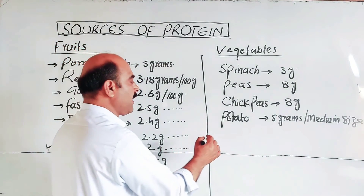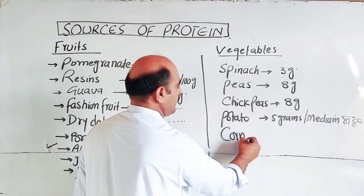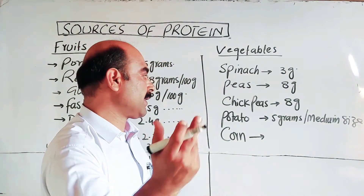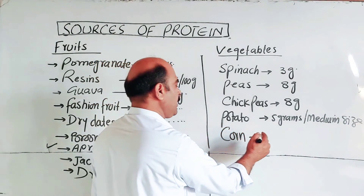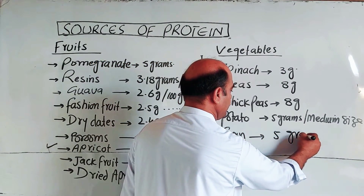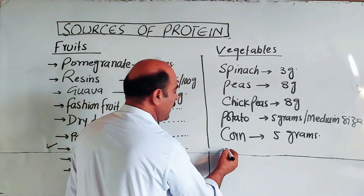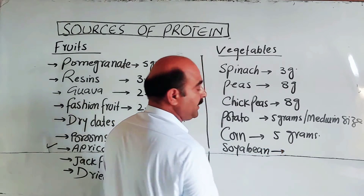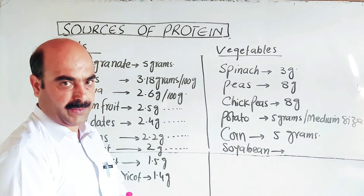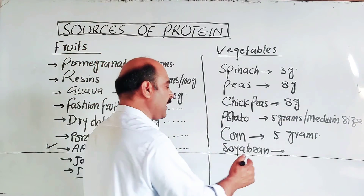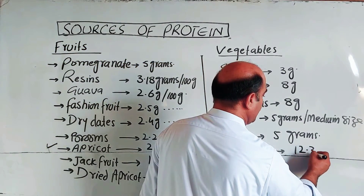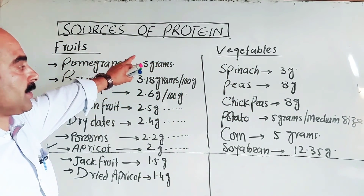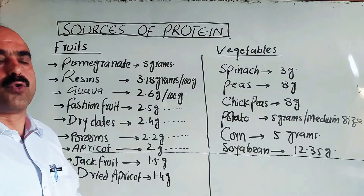Corn also contains protein - approximately 5 grams. Soybean is another important plant source. Soybean seeds have high protein content - approximately 15 grams per serving.